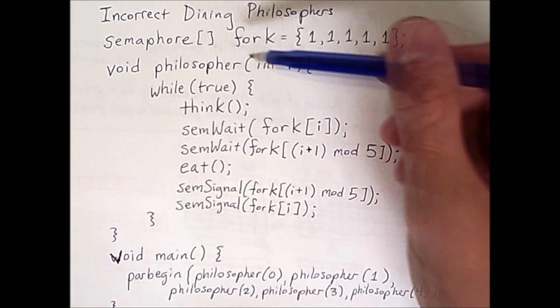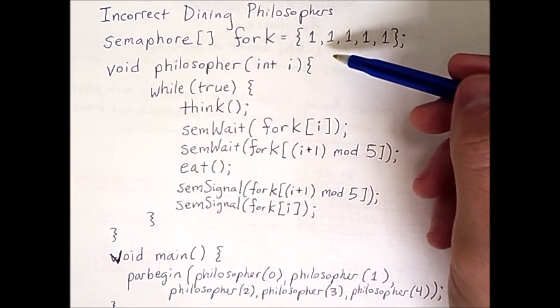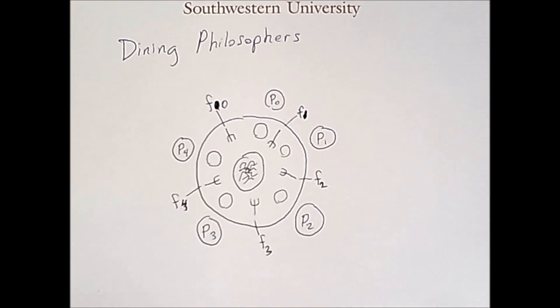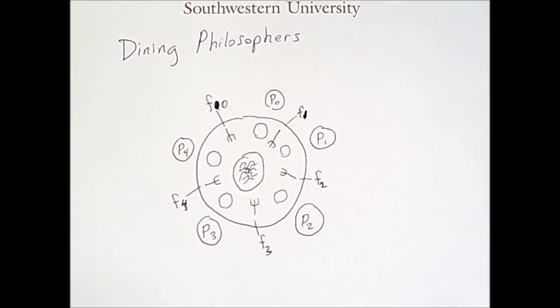We represent each philosopher with its own process. Here is a function that is launched in the main function using this parallel begin statement, and we launch five philosopher threads with different ID numbers. We have philosopher 0, 1, 2, 3, and 4, and these correspond to the little subscript numbers of these philosophers in the diagram.